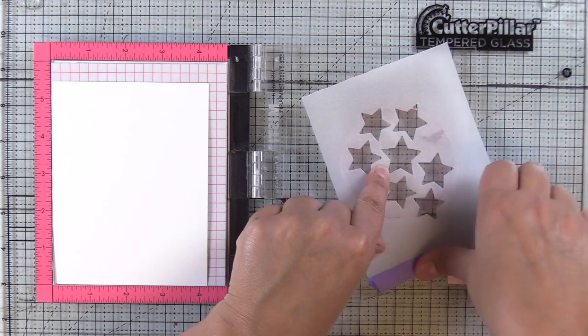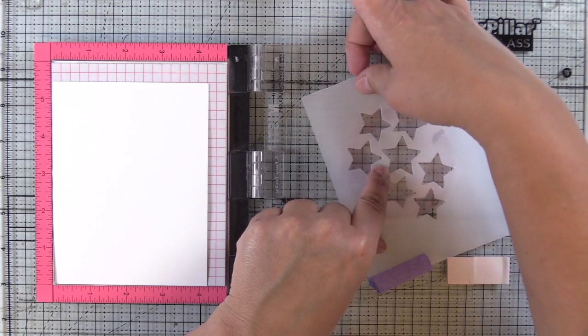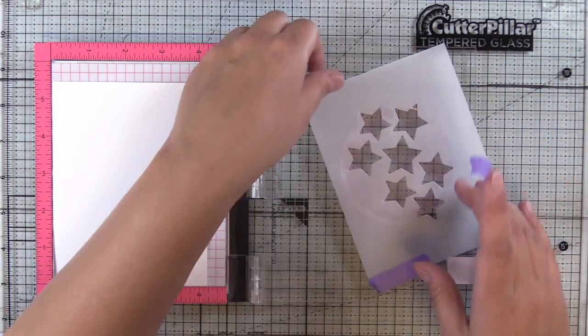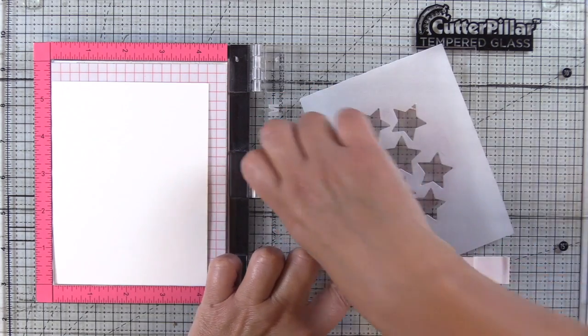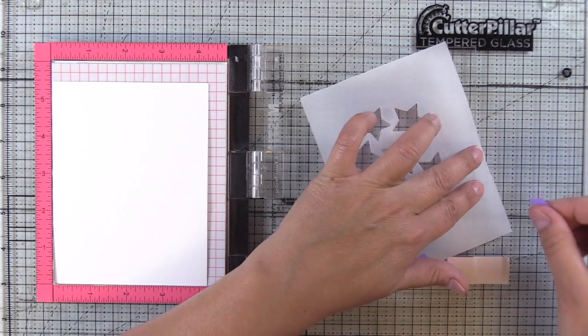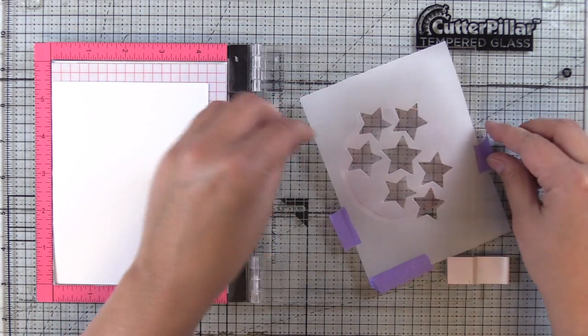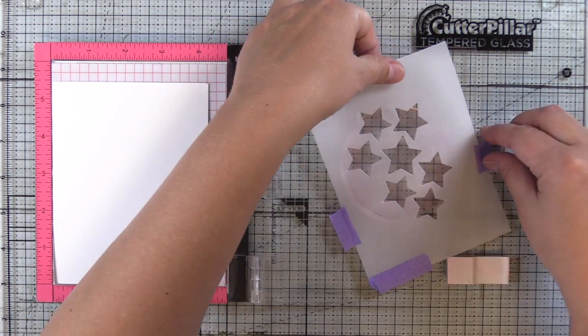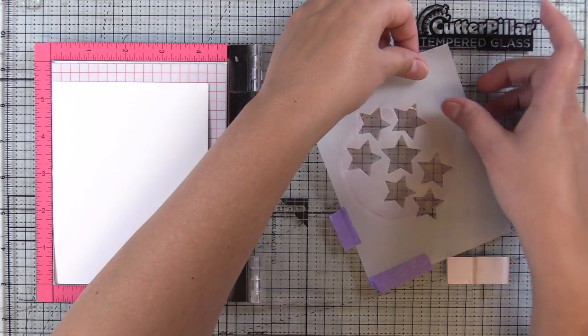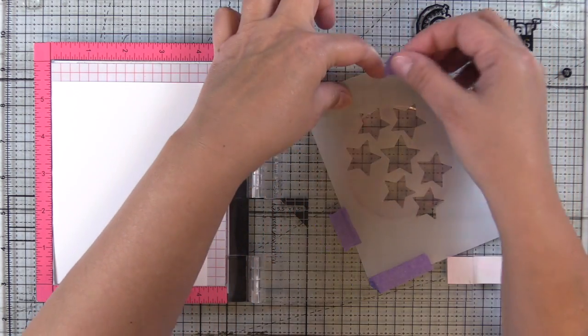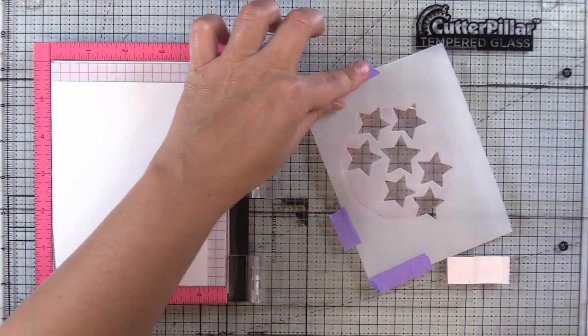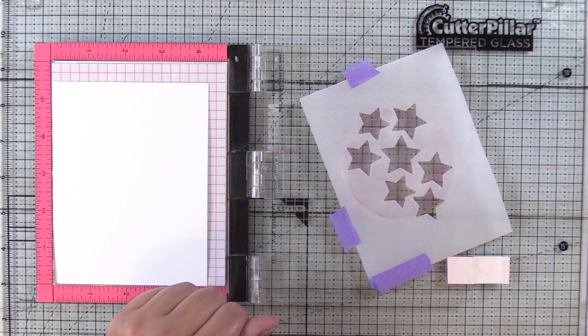I'm going to place my DIY vellum stencil over the stamp and just tape it to my MISTI door. You can do this with stamp blocks—you would just need one that's large enough to stamp your vellum to it, but I do find it's really handy to have a MISTI.